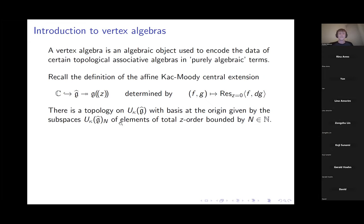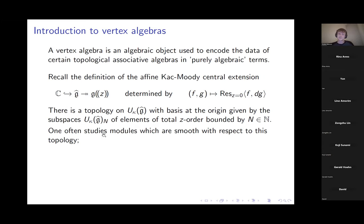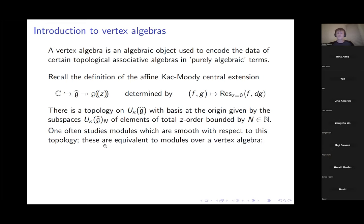When studying modules over affine Lie algebras it's very common to study modules which are smooth with respect to this topology. If you open a paper by Kazhdan-Lusztig studying some variant of category O for affine Lie algebras, the very first thing they'll assume about modules is some compatibility with this topology. These smooth modules are equivalent to what are called modules over a vertex algebra.